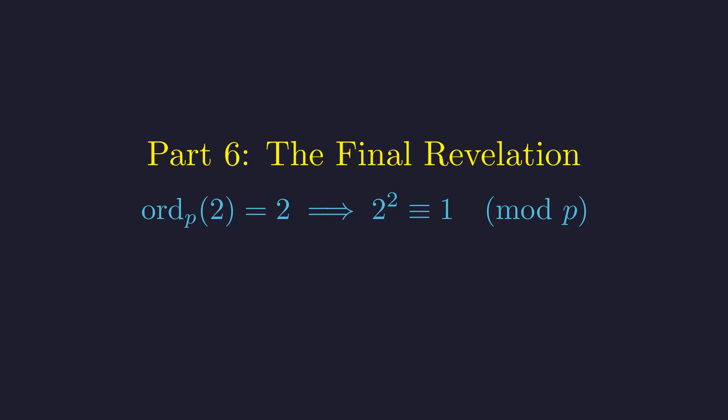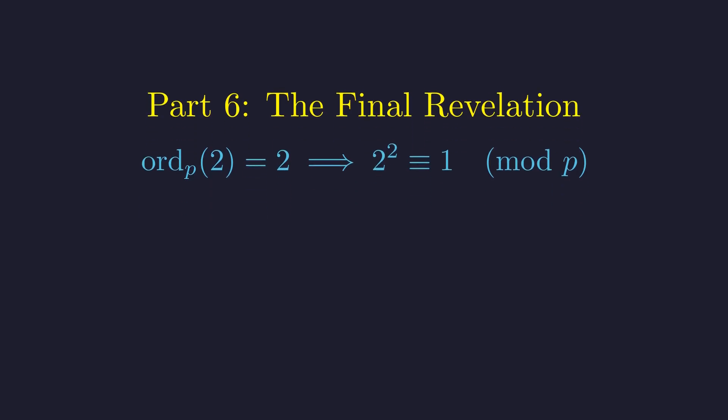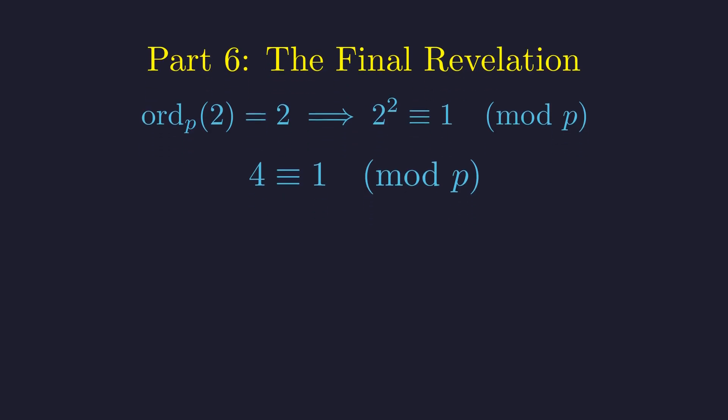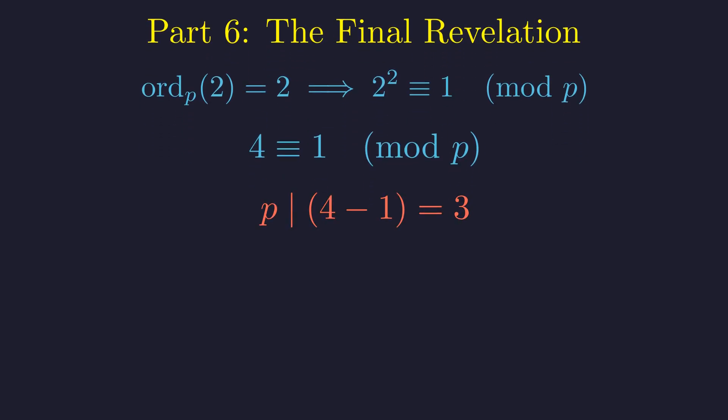If the order of 2 modulo p is 2, then 2 squared must be congruent to 1 modulo p. This simplifies to 4 is congruent to 1 modulo p. This means p must divide 3.